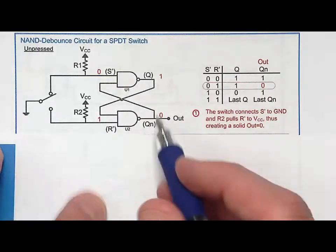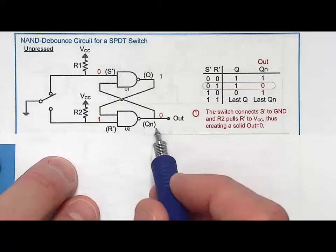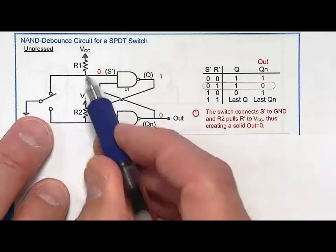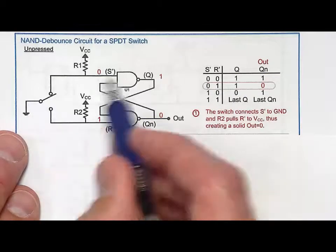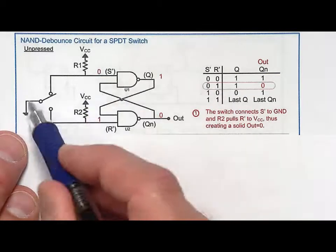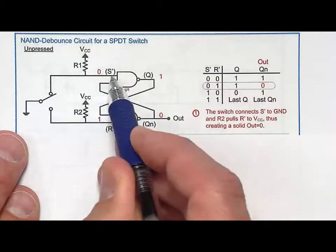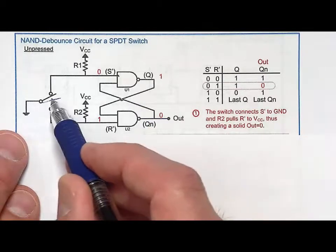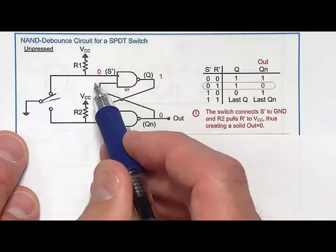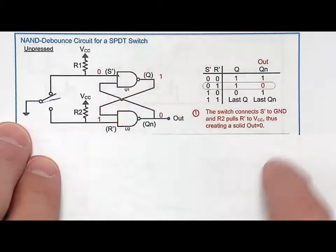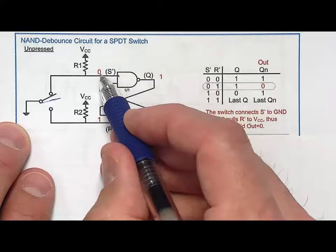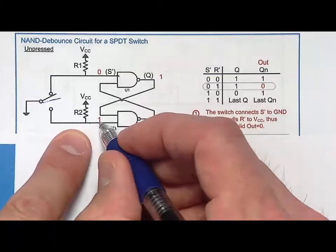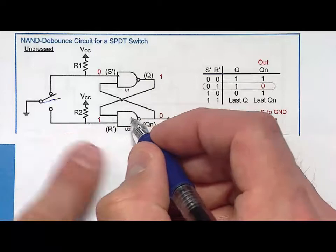The output comes out of Q-bar, and I'm going to put weak pull-ups on both inputs. When the switch drives a terminal to ground, the ground wins over the pull-up - it puts a zero onto that NAND gate. When the switch transitions to the middle, the pull-ups then pull those inputs up to a one. In the unpressed closed position, a zero is driven by the switch on S-bar, and the pull-up drives a one into the other NAND gate input.